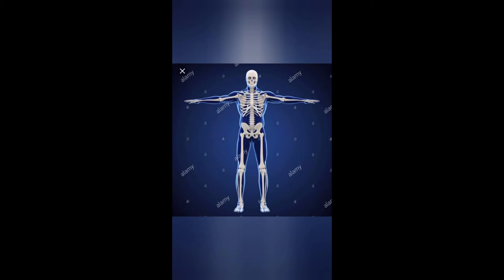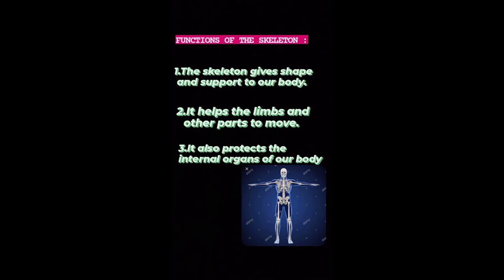The skeleton contains 206 bones joined together. As you all can see in the picture, the skeleton system. Let us see some functions of the skeleton: number one, the skeleton gives shape and support to our body; number two, it helps the limbs and other parts to move; number three, it also protects the internal organs of the body. So these were the functions of the skeleton.